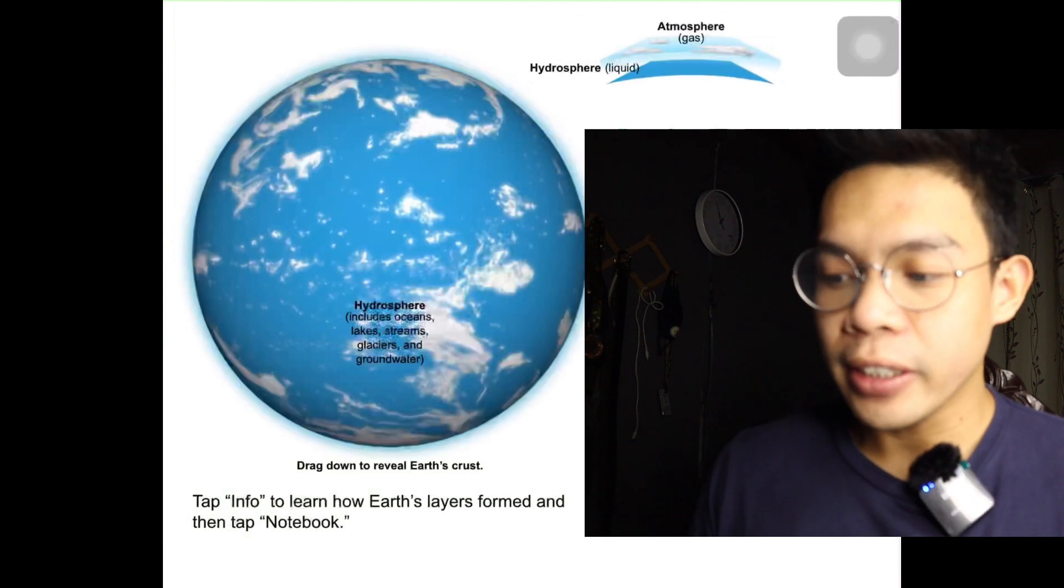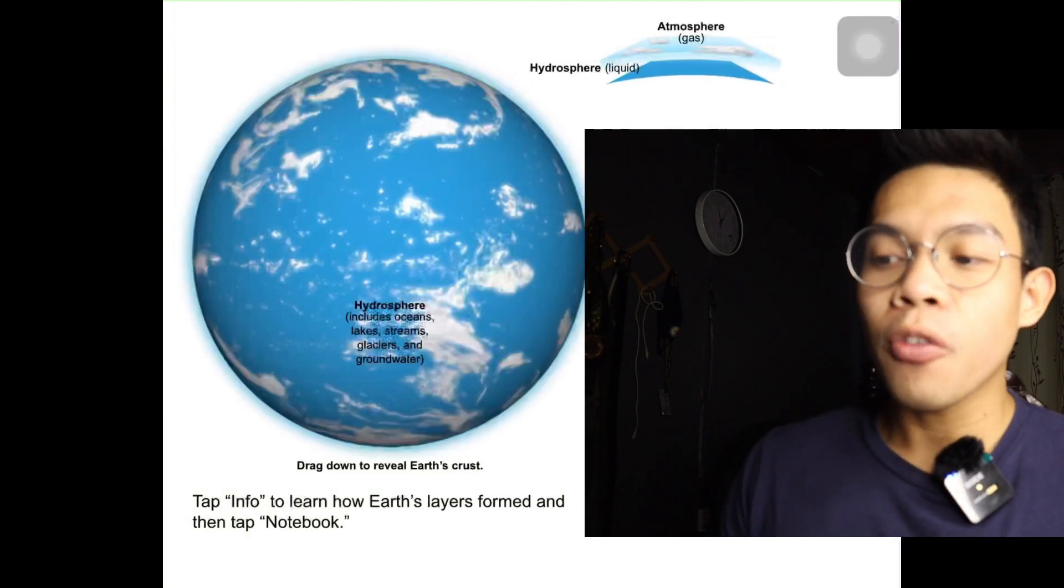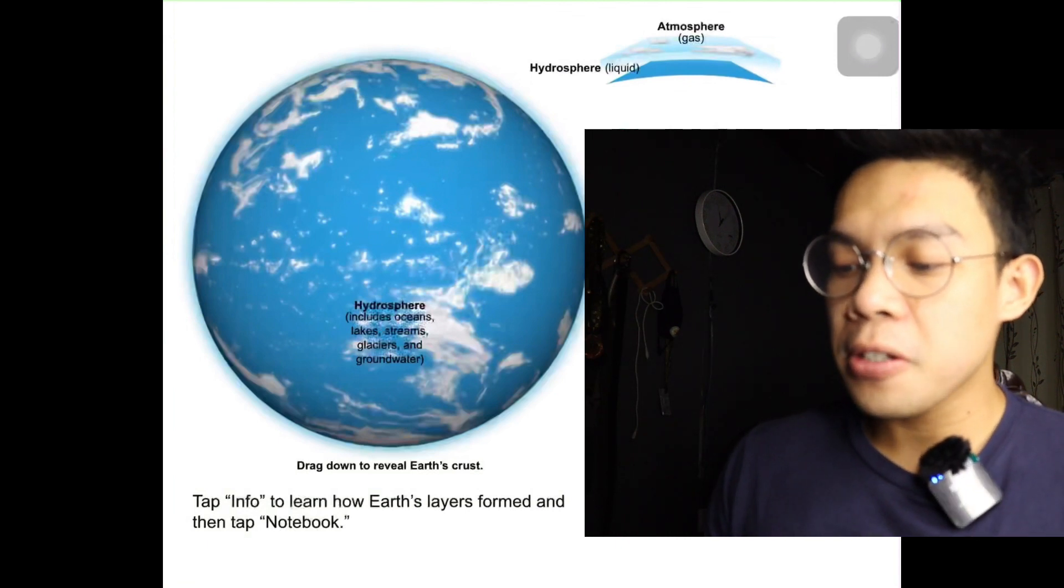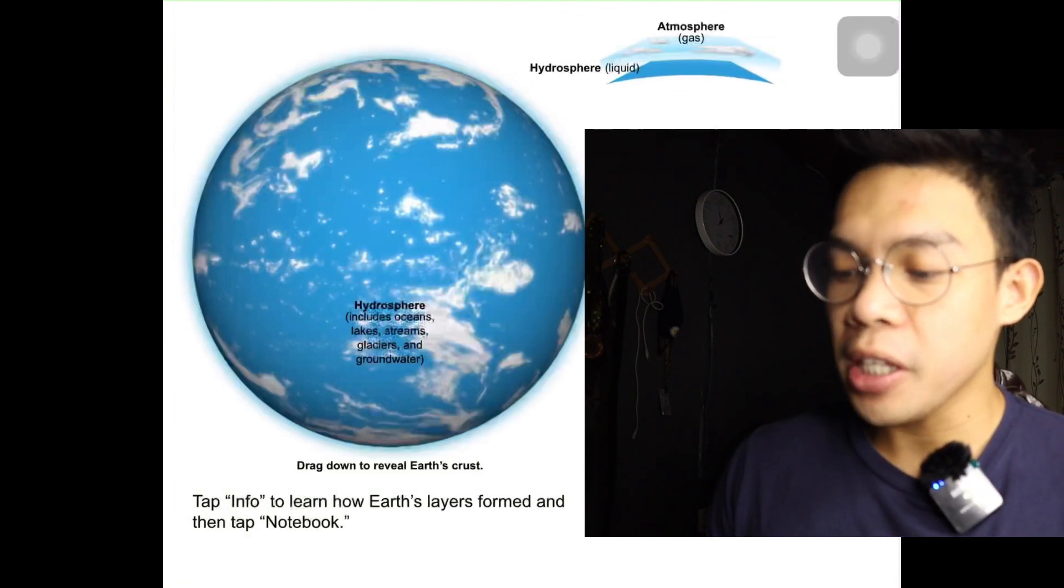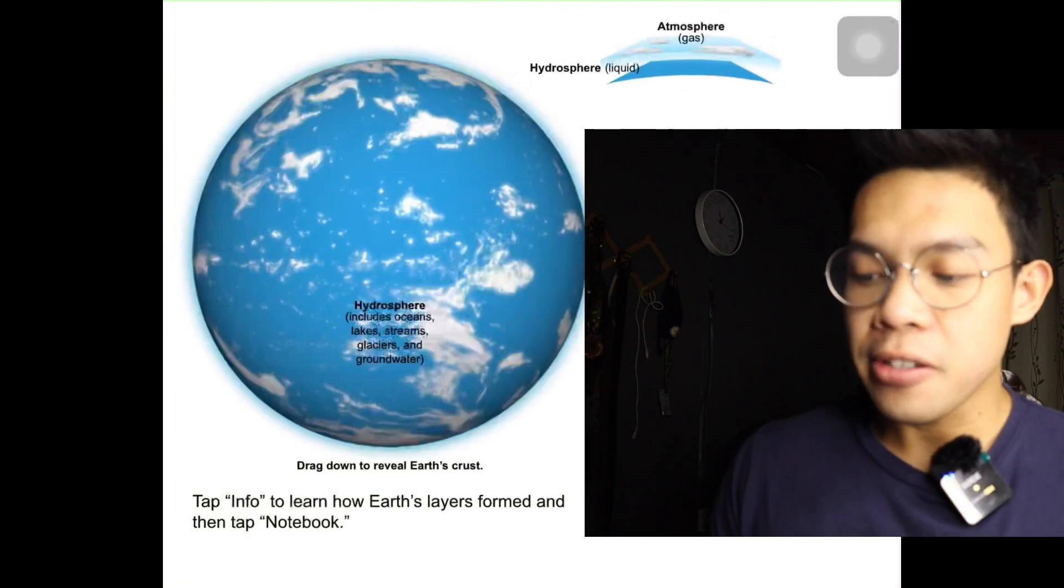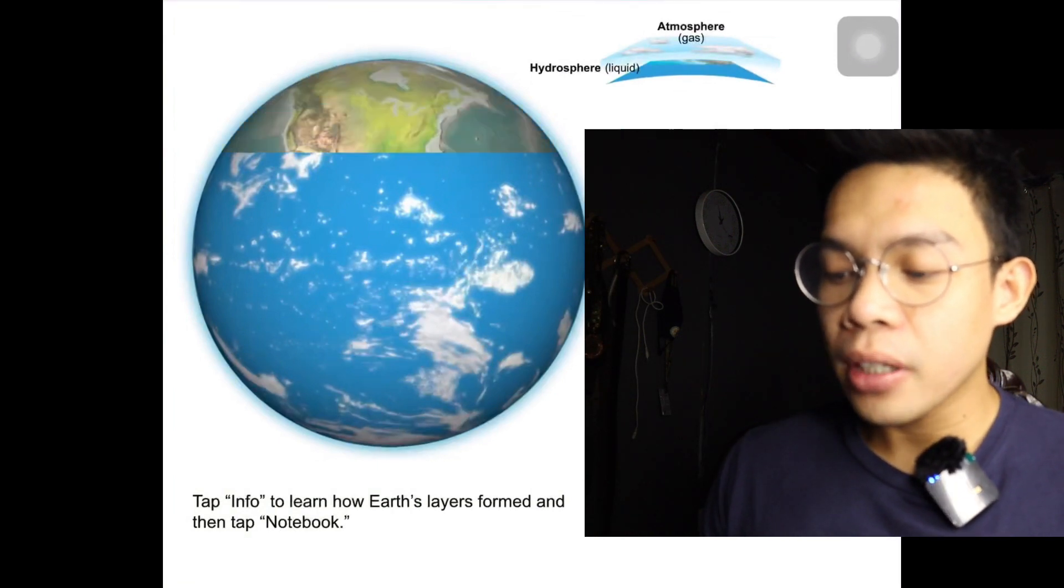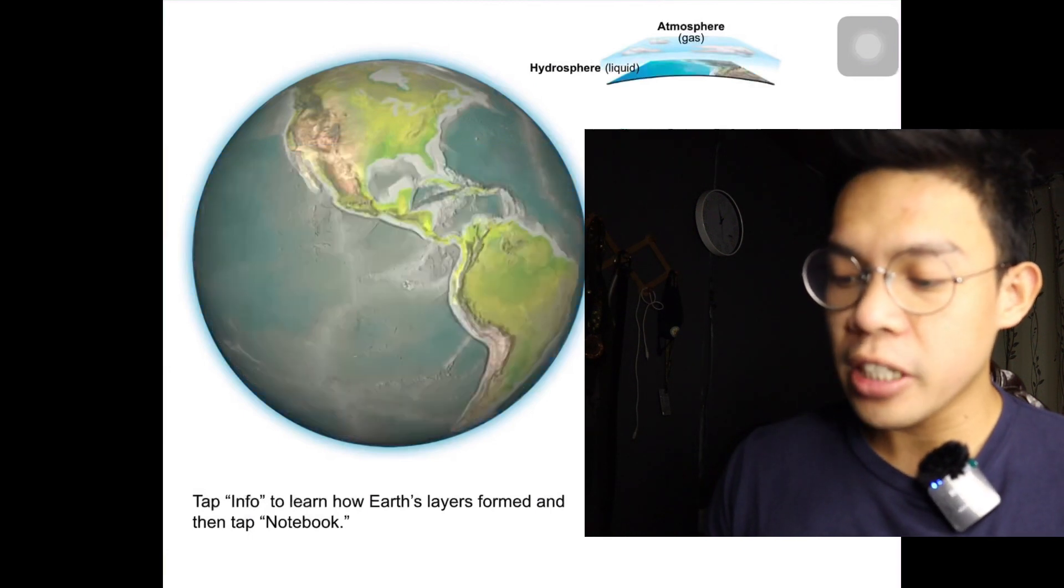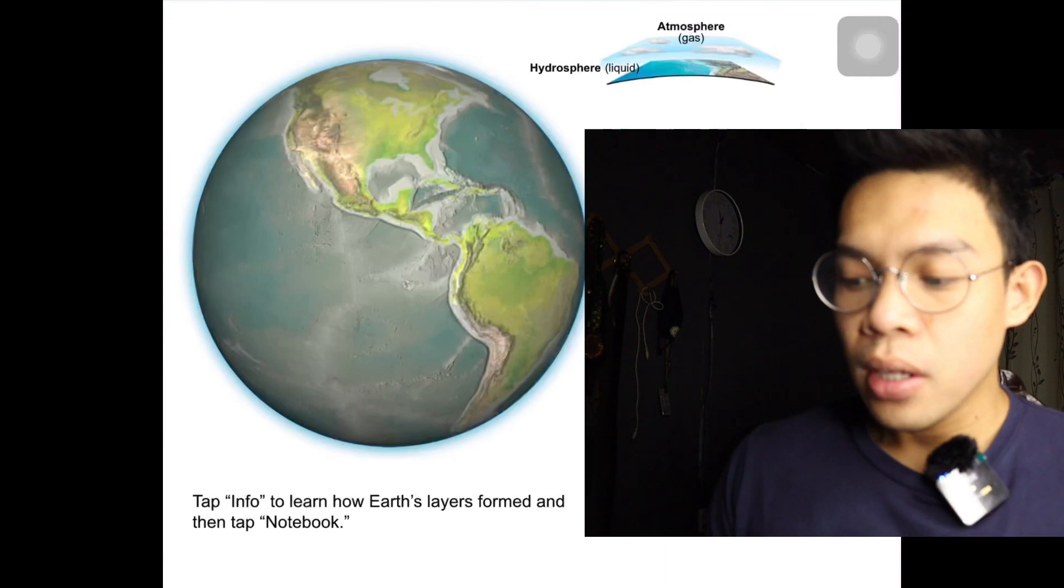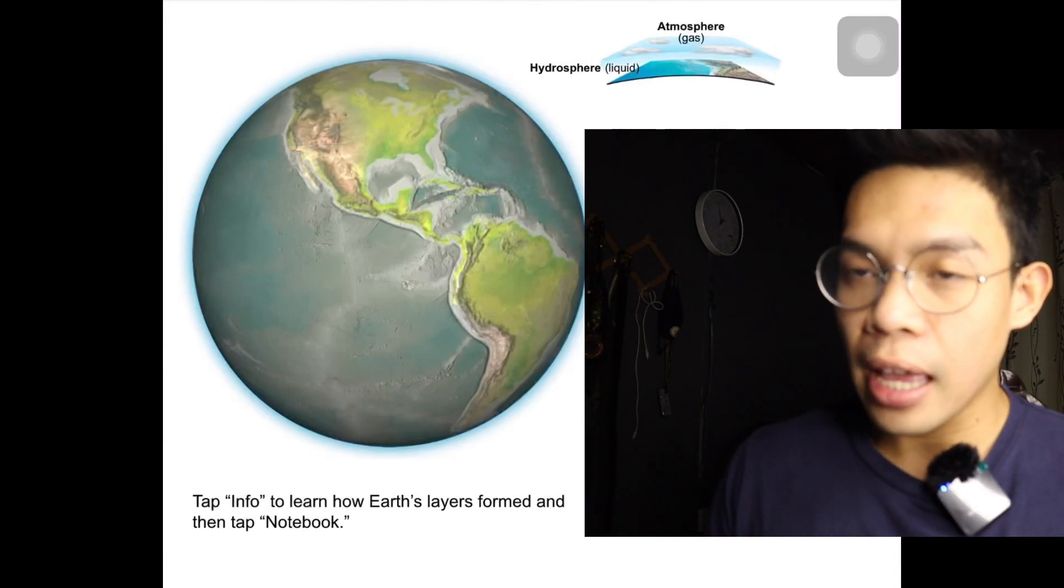The geosphere, or solid Earth, extends from the surface to the center of the planet at a depth of nearly 6,400 kilometers (4,000 miles). The activity on Earth's surface is greatly influenced by what occurs beneath the surface. Earth's interior is divided into three major layers based on composition. The crust is the thin, strong, rocky layer between 5 and 70 kilometers (3 and 44 miles) thick. There are two types of crust: continental and oceanic, which differ in their ages and compositions.